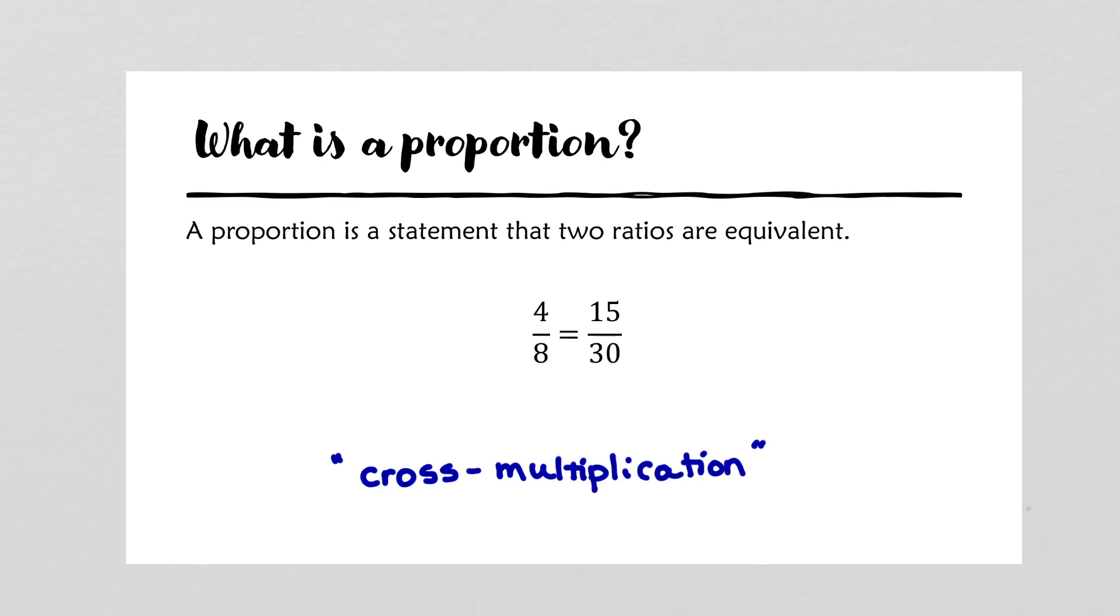Cross-multiplication is a technique that algebra students often use to show that a statement is a proportion, and we also use it often to solve proportions for unknowns. What exactly does it mean by cross-multiplication? Well, cross-multiplication is a simple way of multiplying both sides of an equation by the least common denominator. When we do this, the following effect takes place.